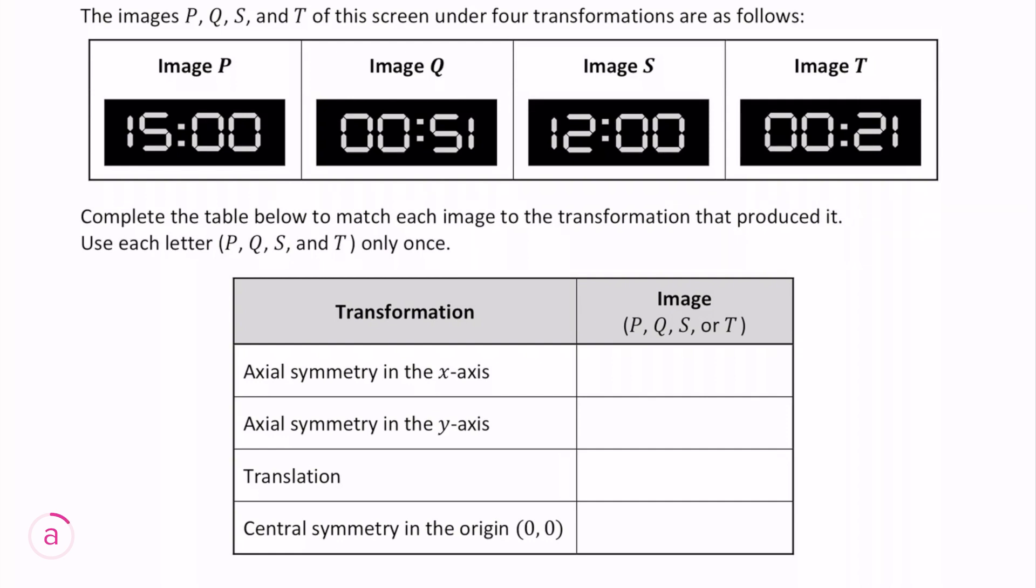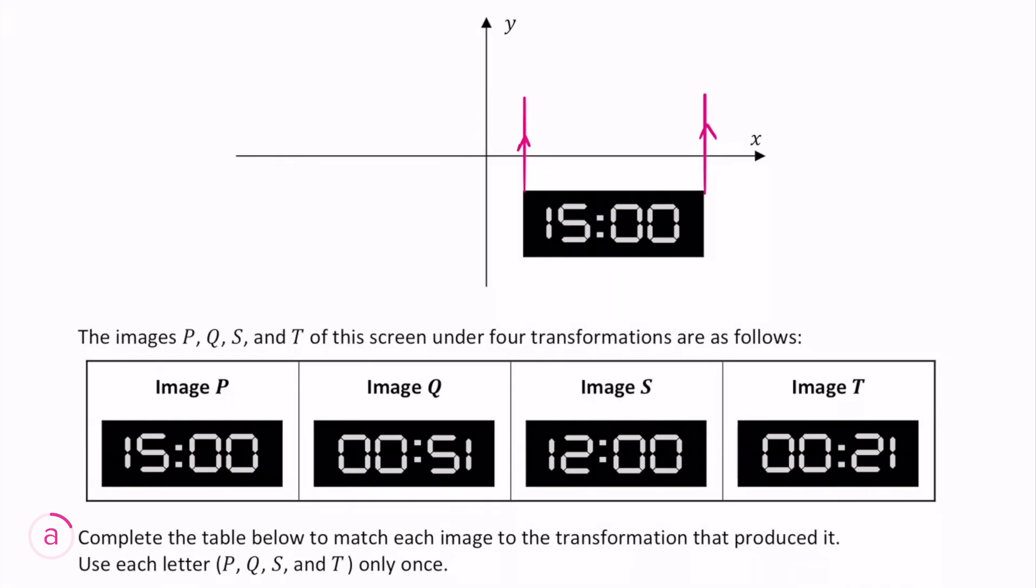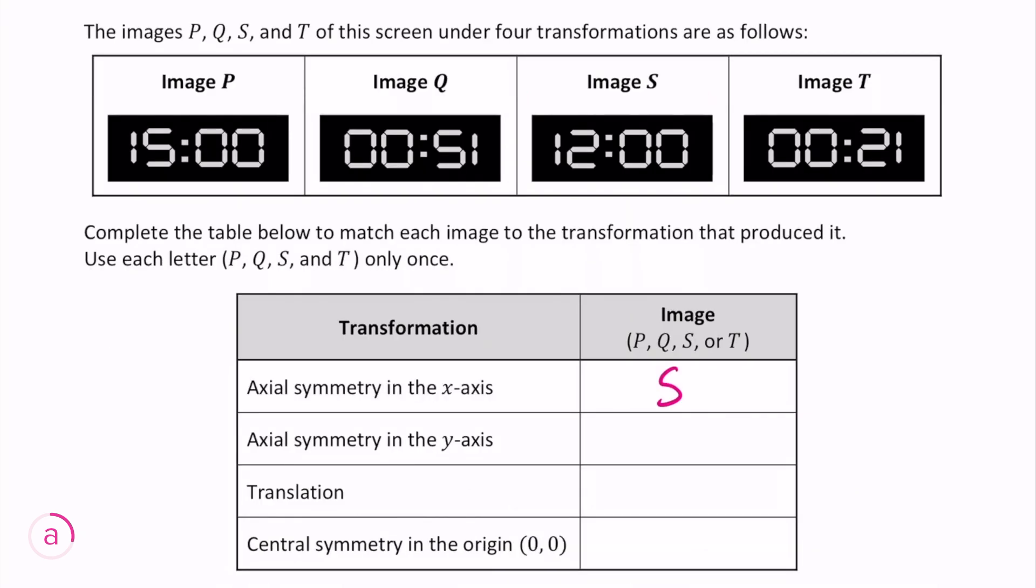The first transformation is axial symmetry in the x-axis. This transformation would involve moving each point of the clock through the x-axis and projecting it an equal distance on the other side. This would cause it to be flipped vertically, so the answer for the first transformation is image S, as this is what the clock would look like flipped vertically.